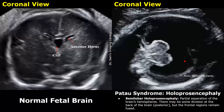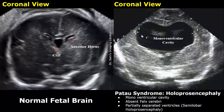Semilobar holoprosencephaly is the second type. It is less severe than alobar holoprosencephaly, but it still contains very severe malformations. In this type, there is partial separation of the brain's hemispheres. There is some division at the back of the brain — the posterior part — but the frontal regions are fused. So you will still find fused thalami anteriorly and a monoventricular cavity. Some normal brain tissue is present and partially separated ventricles are seen, but it is still a monoventricular cavity. The falx cerebri and cavum septum pellucidum are also absent.